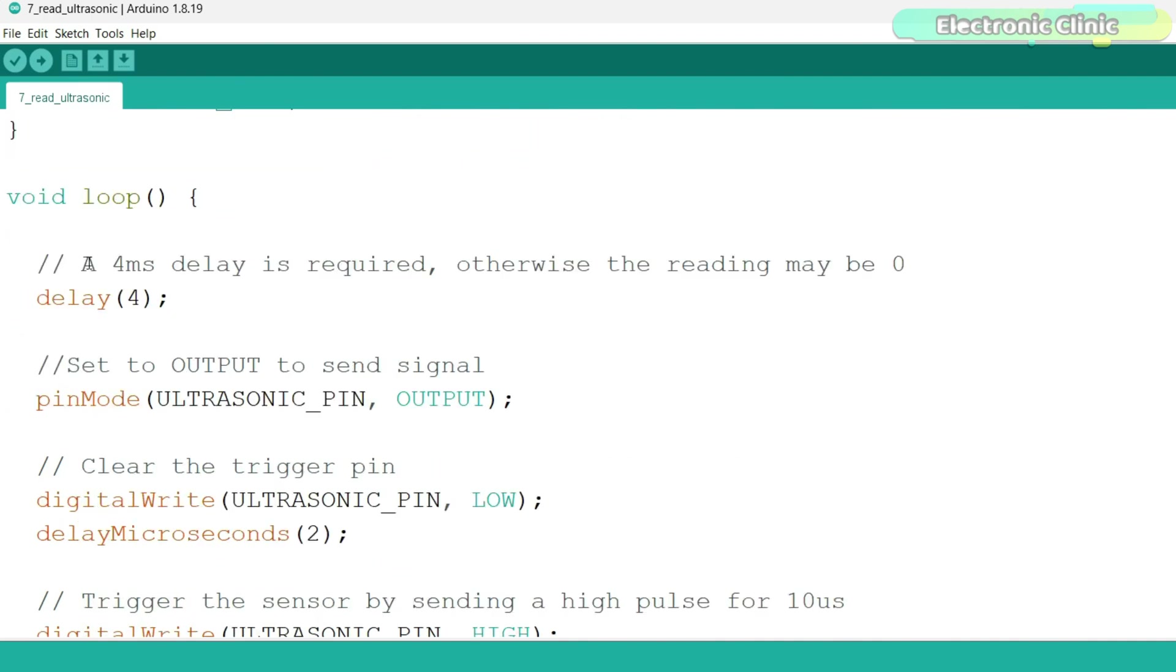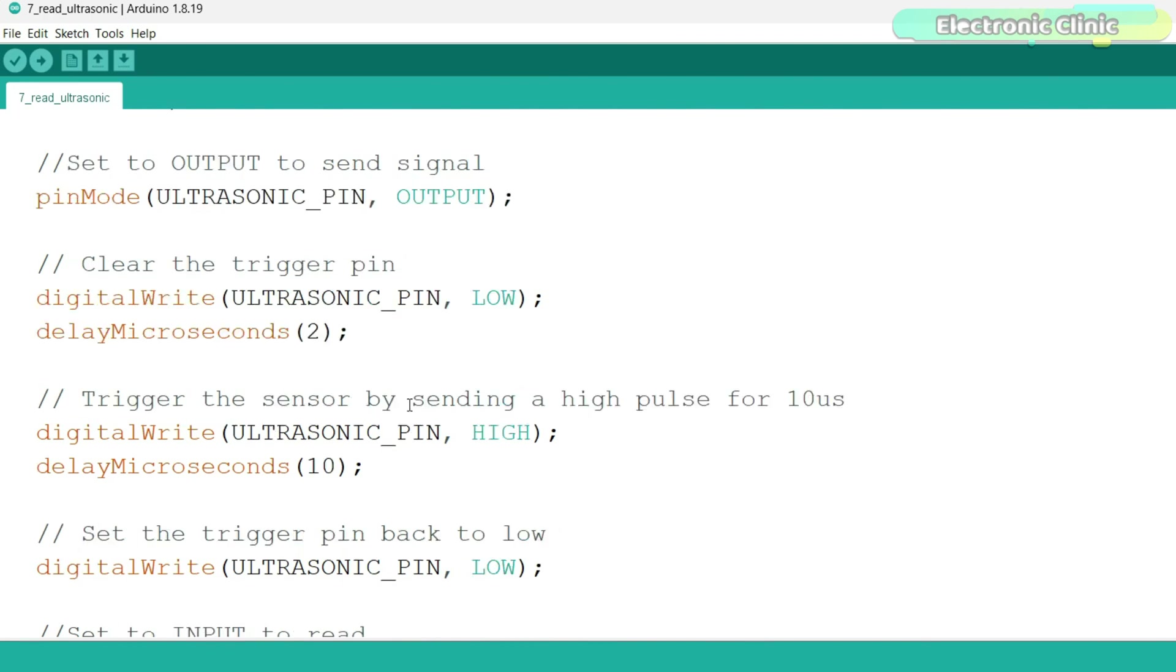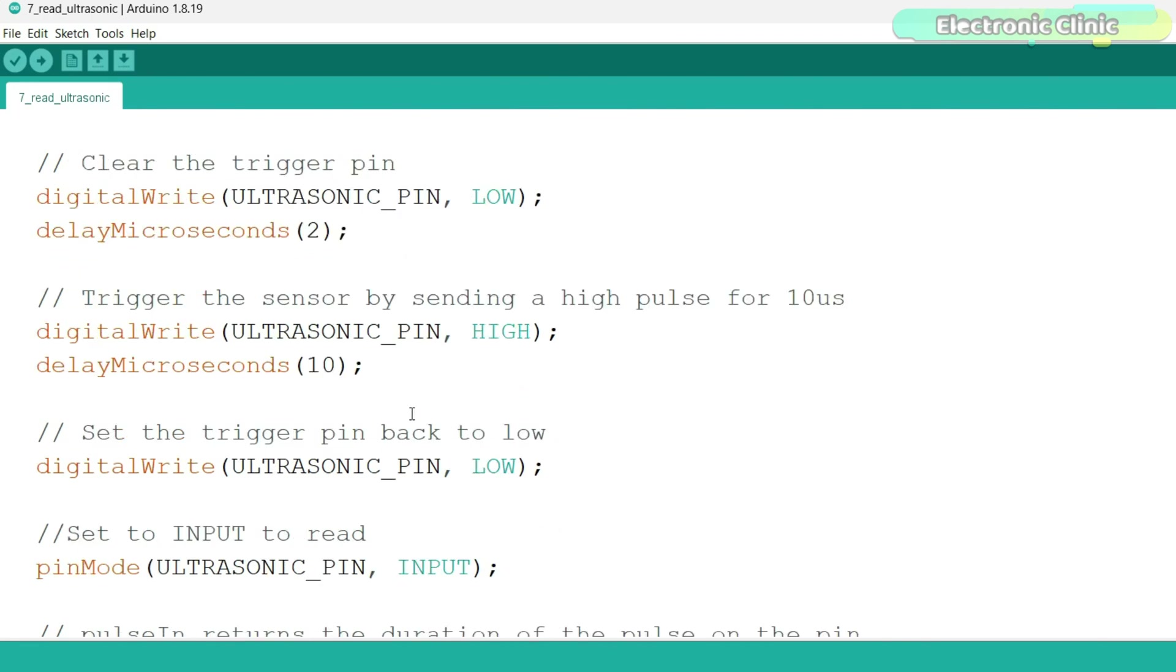In the loop function that runs repeatedly, we start off by adding a delay of 4 milliseconds, otherwise the reading may be zero. We set the ultrasonic pin to output to send a signal, then we clear the trigger pin. Then we trigger the ultrasonic sensor by sending a high pulse for 10 microseconds.